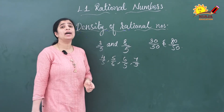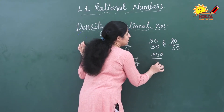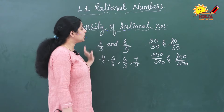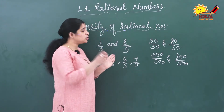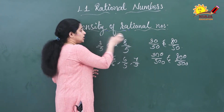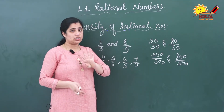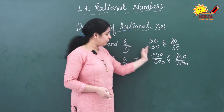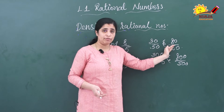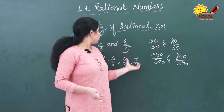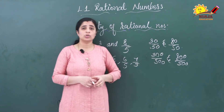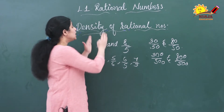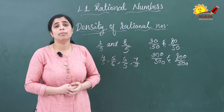Next, I am going to multiply these two numbers by 100, giving 300/500 and 800/500. This way, you can find an infinite number of rational numbers in between two rational numbers. Between 3/5 and 8/5, you might think there are only four rational numbers, but by changing them into equivalent fractions — like 30/50 and 80/50 — you can find many more. This is known as the density of rational numbers.